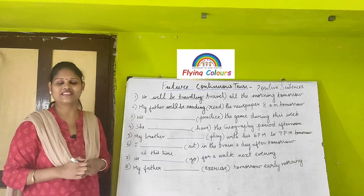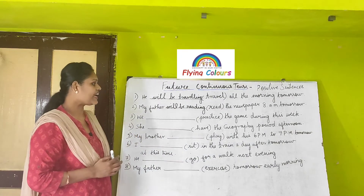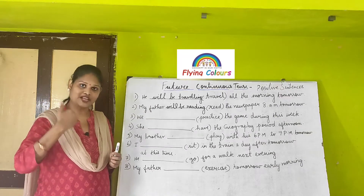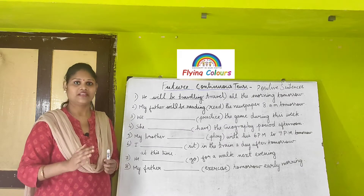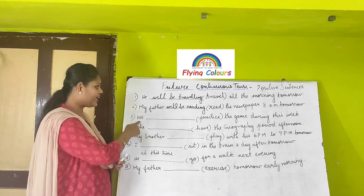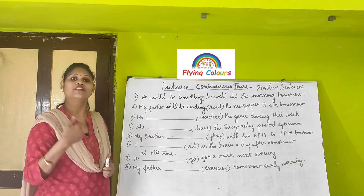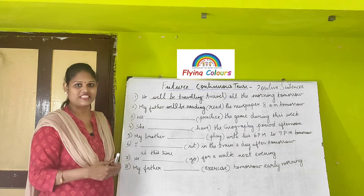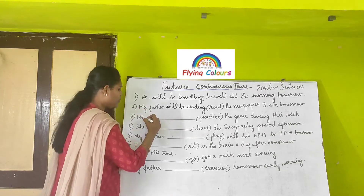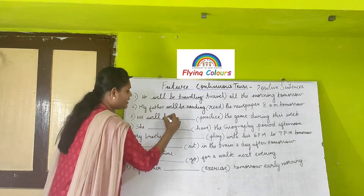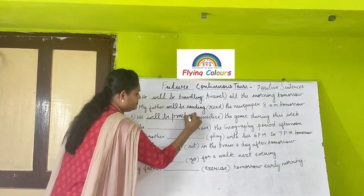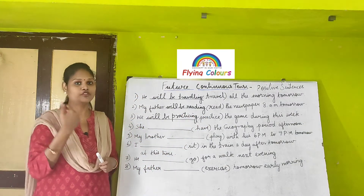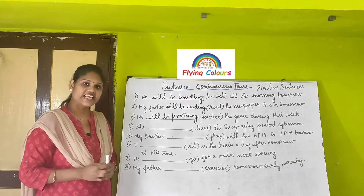Next sentence: 'We ___ practice the game during this week.' The action is yet to happen in the future over a period of time and is not completed. So: 'We will be practicing the game during this week.' The main verb is 'practice,' and you add -ING to get the present participle 'practicing.'